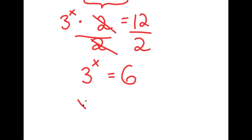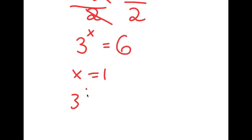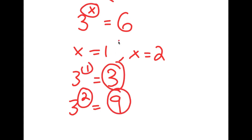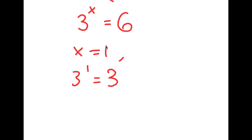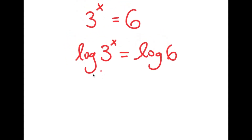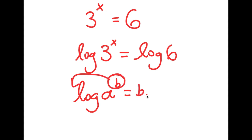If we plug in x equals 1, we get 3 to the power of 1, which equals 3. If we plug in x equals 2, we get 3 to the power of 2, which equals 9. So we know that x has to be somewhere between 1 and 2, because 6 is between 3 and 9, meaning x is going to be a decimal value. To find the exact value of x, we're going to have to use logarithms. So if I take the log on both sides, I get log of 3 to the power of x is equal to log 6.